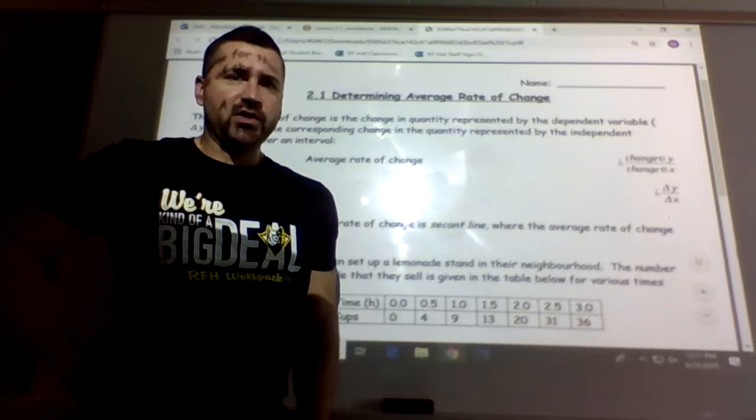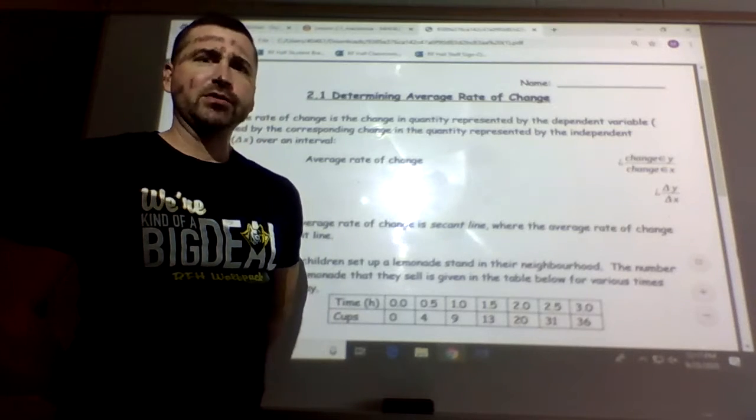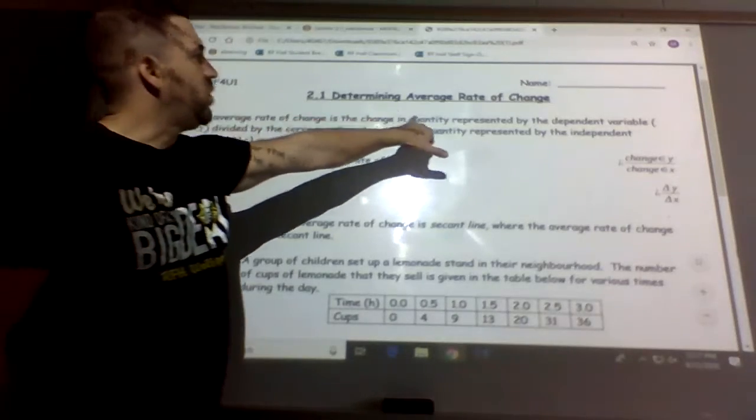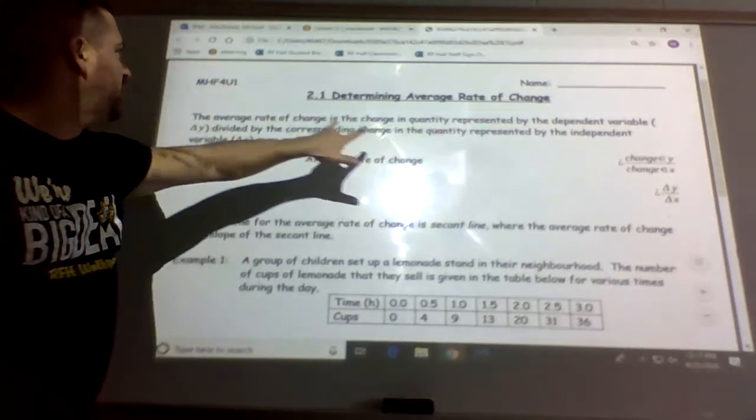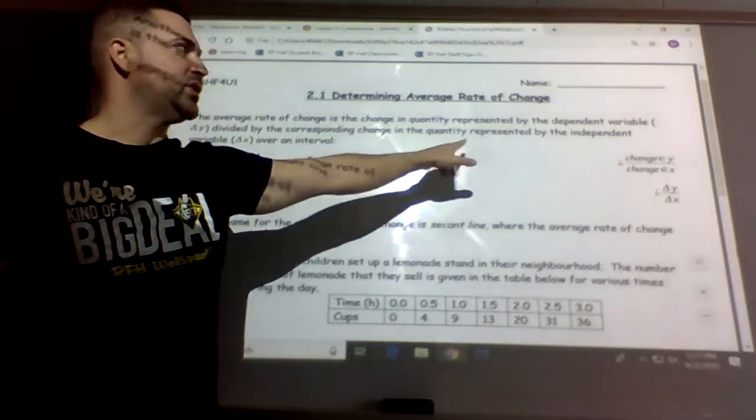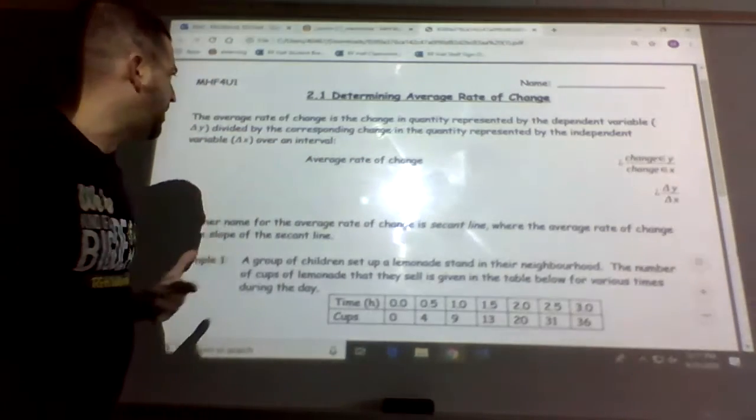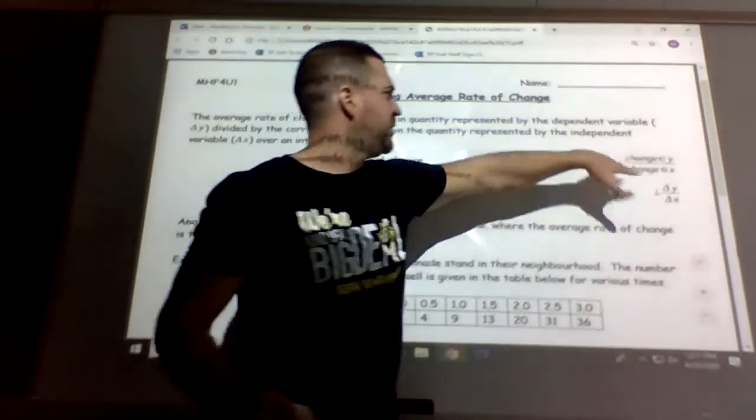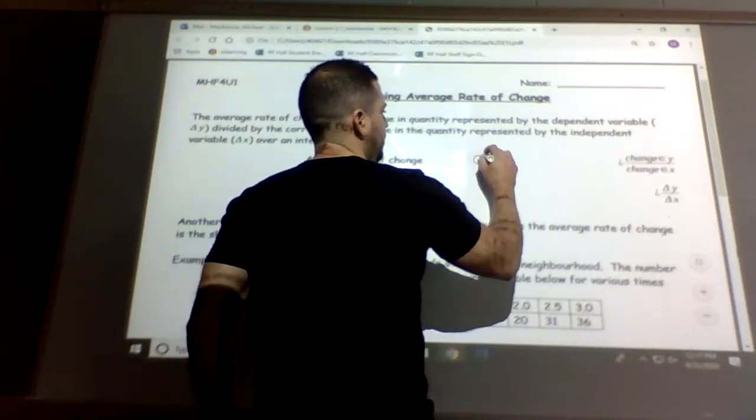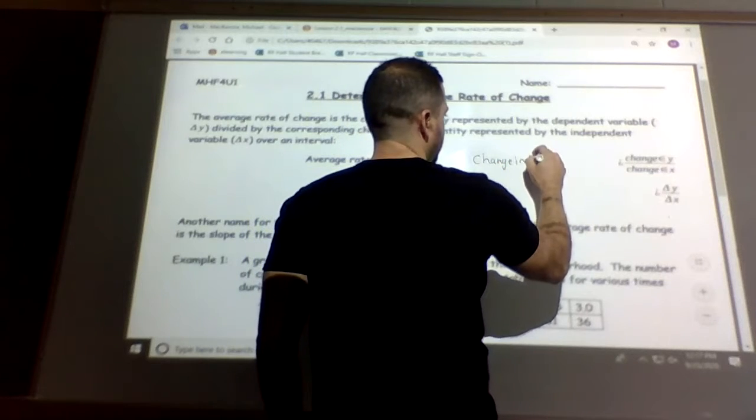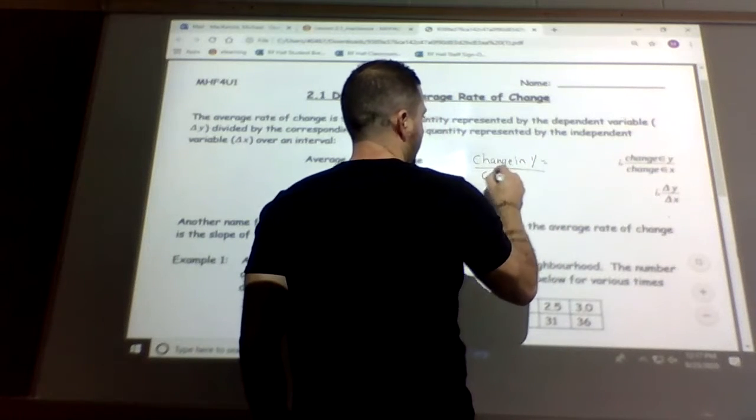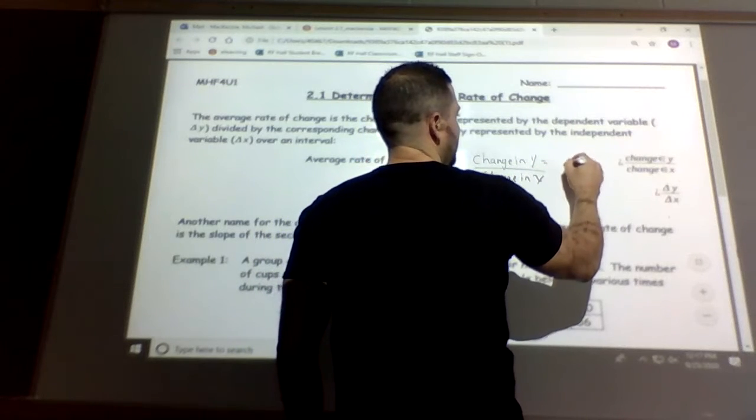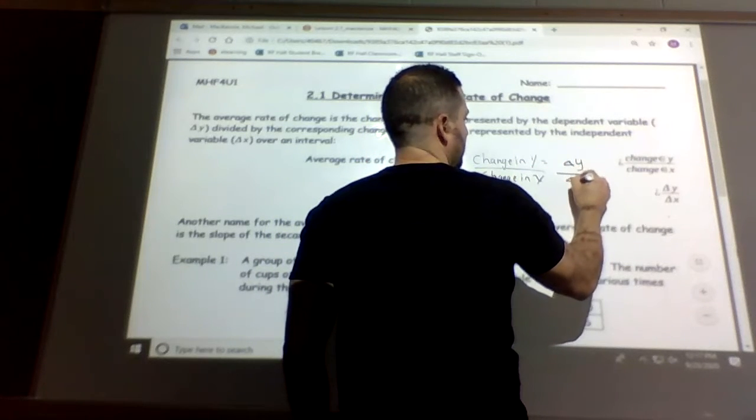We're just doing average rate of change, which is the same as calculating slope. So the average rate of change is the change in quantity represented by the dependent variable y divided by the corresponding change in quantity represented by the independent variable x. I think this got mixed up here, so it should be the change in y divided by the change in x, which would be delta y over delta x.